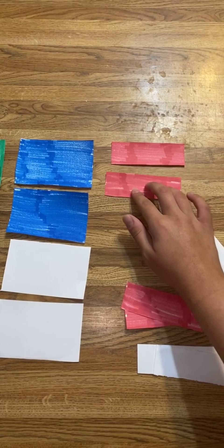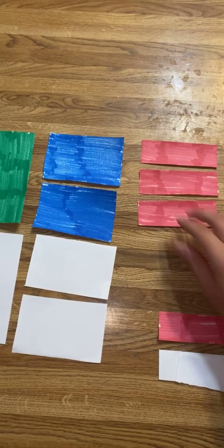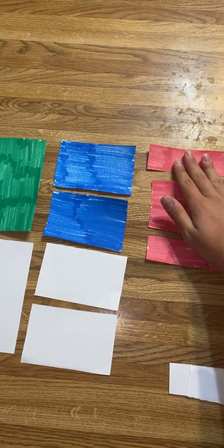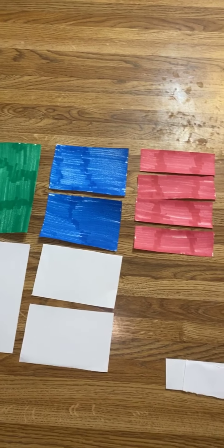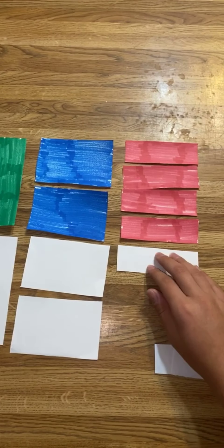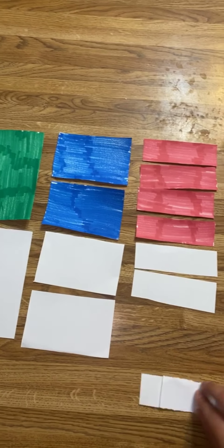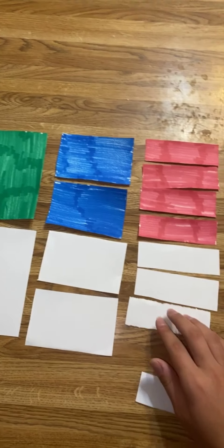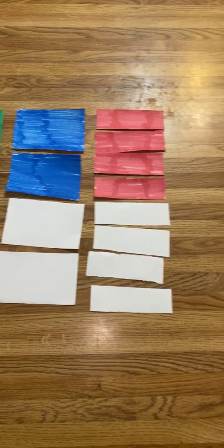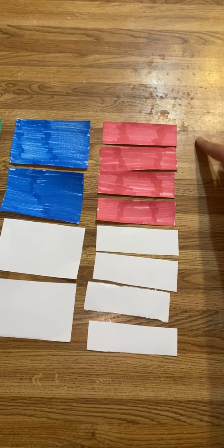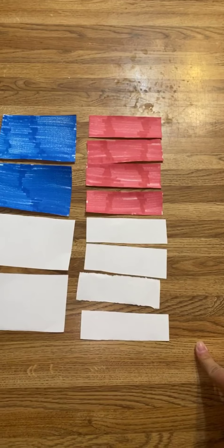Now we have four total shaded pieces out of eight altogether total. Since we have four shaded out of eight total, this is the fraction 4/8.